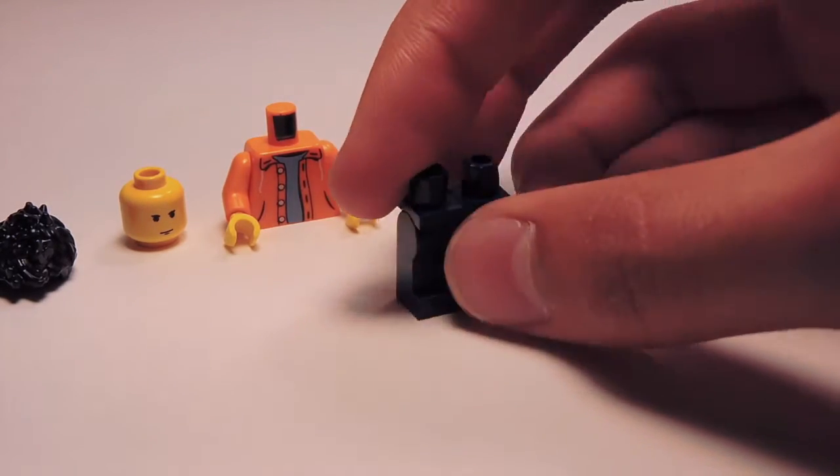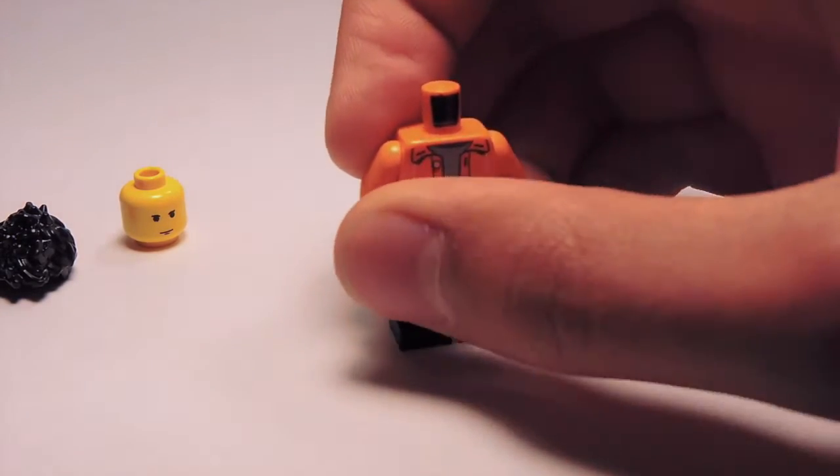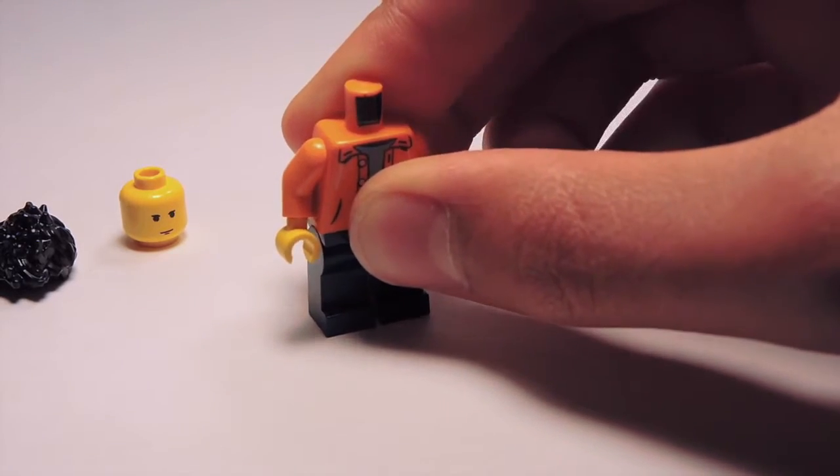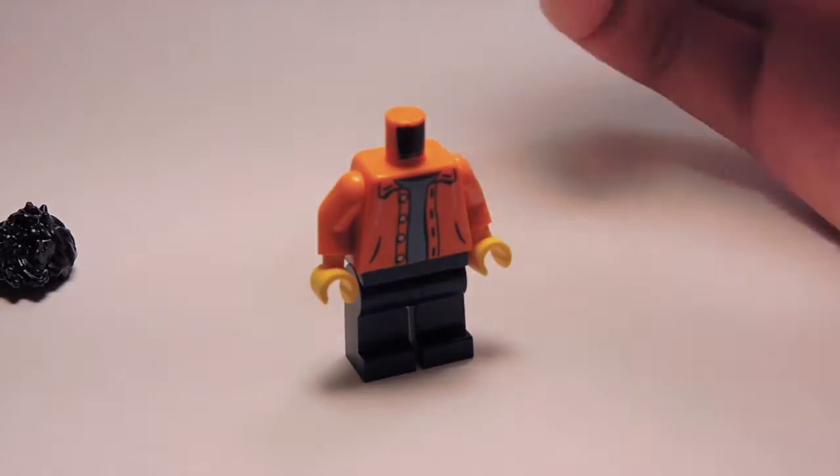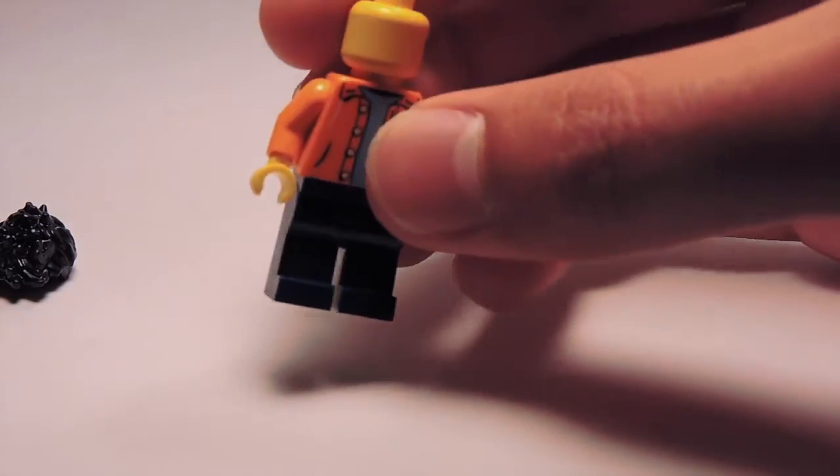So to make the actual minifig, you're going to get the jeans, or the legs, you're going to attach the torso on top. You guys probably already know how to make a minifig, right? Of course, the head goes on top of the torso, glad that humans are born like that.